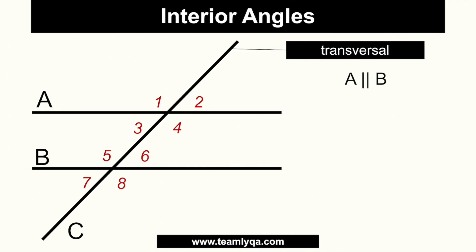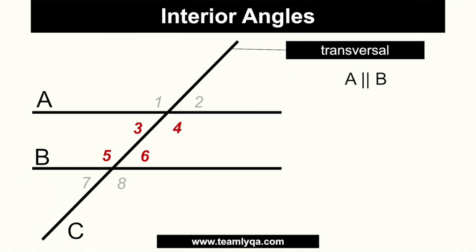Let's start with one of the basic terms we need to understand: interior angles. What do interior angles mean? In this situation, interior angles are the angles that are inside — the word 'interior' starts with the prefix 'in,' meaning inside. So the interior angles here are angles 3, 4, 5, and 6 — they are inside the two parallel lines.